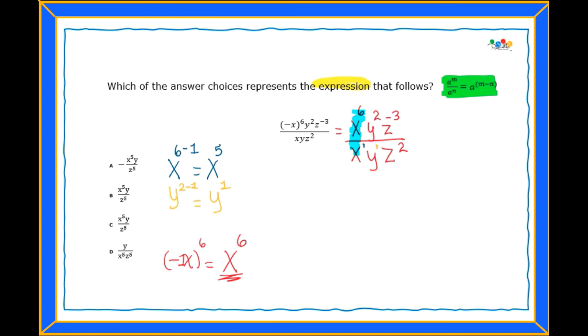And then last one, it's z to the negative third power, and I'm going to take away two from there. And I will get z to the negative fifth power.